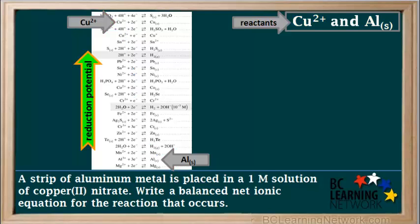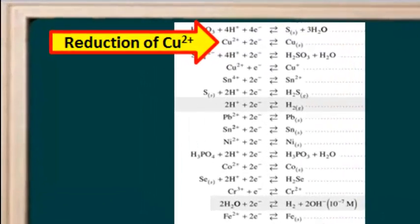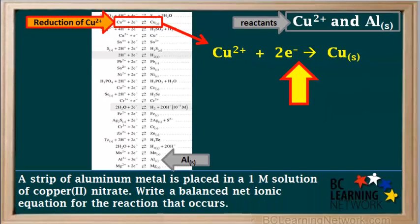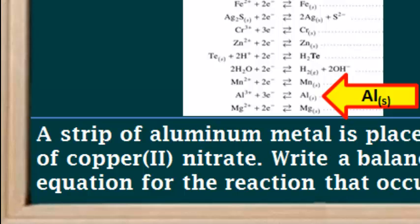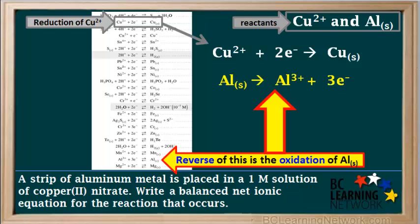The table is set up so that the reduction potential increases as you move up the table. In a spontaneous redox reaction, the higher half reaction on the table will be the reduction. So we write the half reaction for the reduction of Cu²⁺ here. Since it's a reduction, we write it the way it is on the table. The half reaction for aluminum solid is the lower of the two, so it must be the reverse of what is written on the table, and it will be an oxidation. So we can reverse this half reaction and write it here.